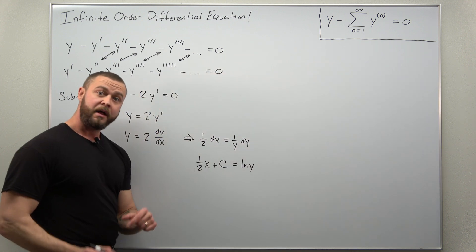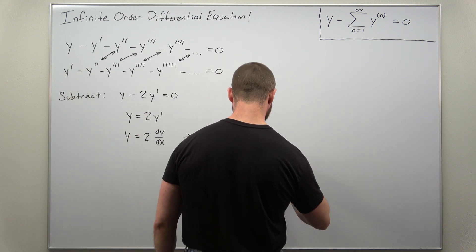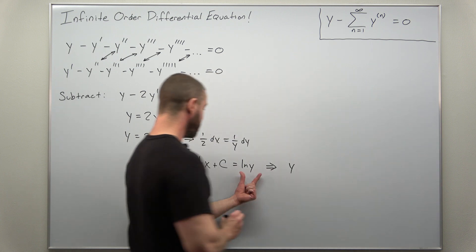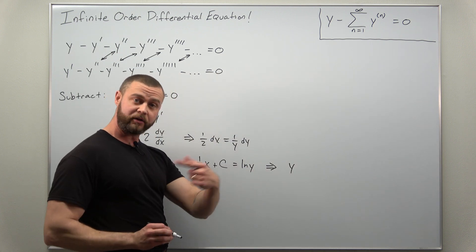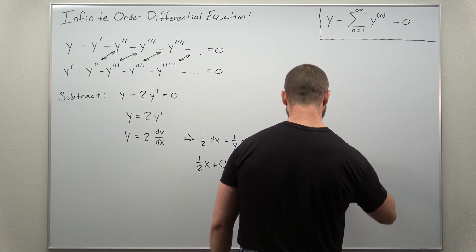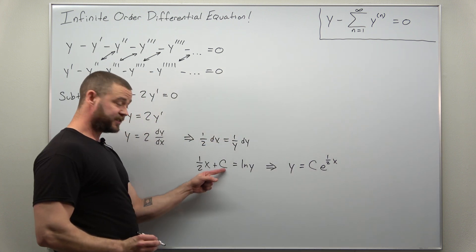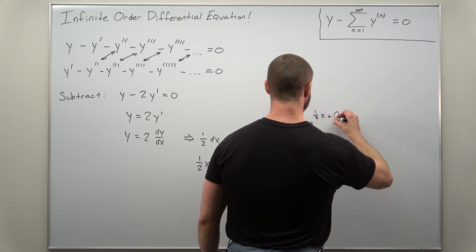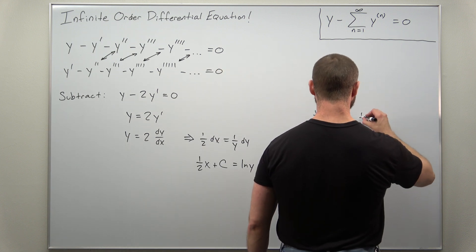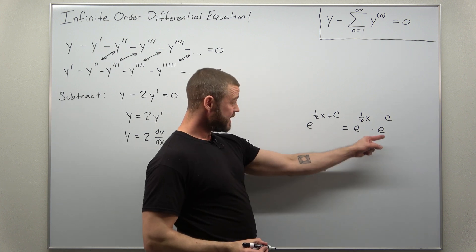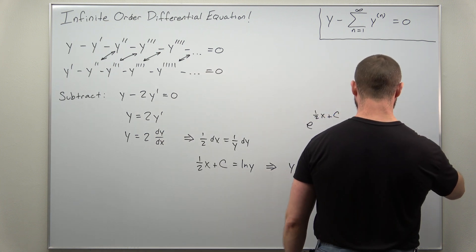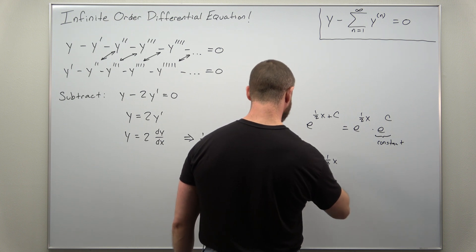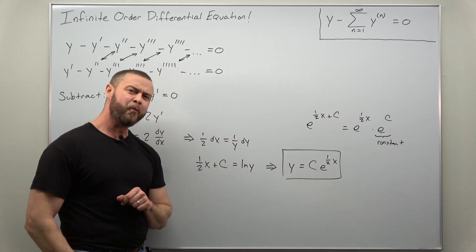The right side integrates to the natural log of y. Exponentiating both sides with base e, we get e raised to the one half x plus c, which we rewrite using exponent rules as e to the one half x times e to the c. Exponentiating the natural log of y cancels, leaving y. Since e to the c is another constant, we call it c, and we get our solution to this infinite order differential equation.